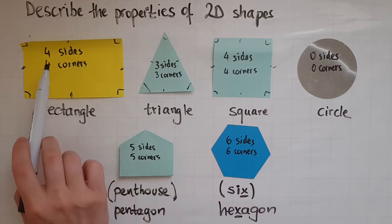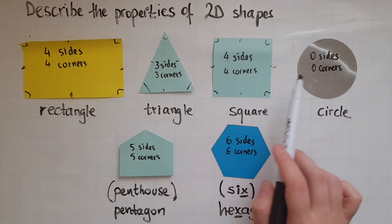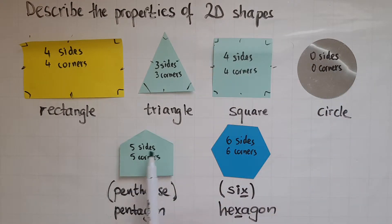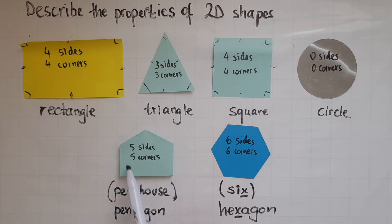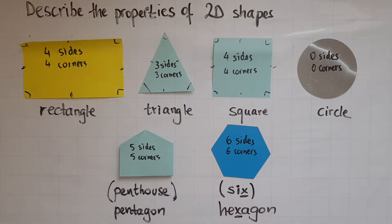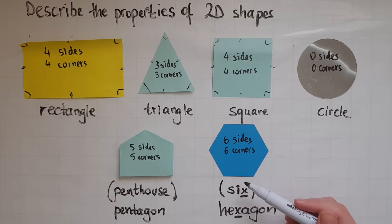What do you notice? Four sides, four corners. Three sides, three corners. Four sides, four corners. Zero sides, zero corners. Five sides, five corners. Six sides, six corners. So the number of corners matches the number of sides. If you remember that the pentagon is like a penthouse, it has five sides — and that means it has five corners as well. A hexagon has six sides and it has six corners as well.